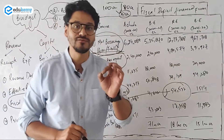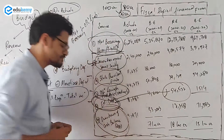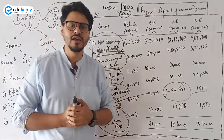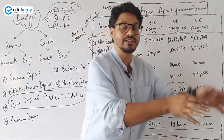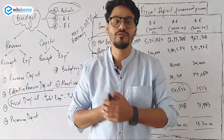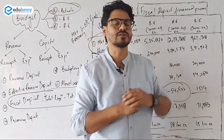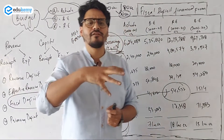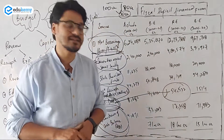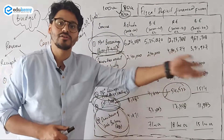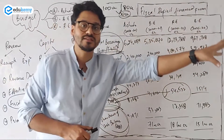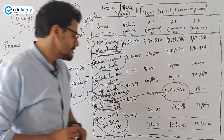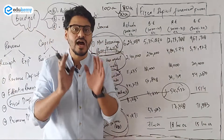Then we have drawdown of cash balance — this is very important and could appear as an option in a question. The government has some money with the RBI in the form of cash. This is government's money kept with the RBI, as the RBI is an agent of the government and manages government money. The government can take some money back from the RBI — that is known as drawdown from the cash balance. Cash is kept with the RBI by the government, and some of that money is taken back to finance the fiscal deficit.